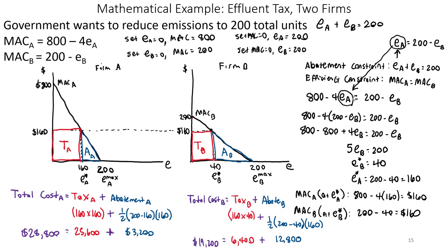The government wanted to reduce emissions to 200 total units — the optimal amount of pollution the Earth could handle. So E sub A plus E sub B, the emissions from both firms, had to equal 200. The efficiency constraint is to set the two marginal abatement cost curves equal to one another, then plug in the abatement constraint into that equation. Solving for E sub B star gave us an optimal of 40 units, and E sub A star was 160 units. Plugging 160 into MAC sub A and 40 into MAC sub B gives the optimal tax rate.